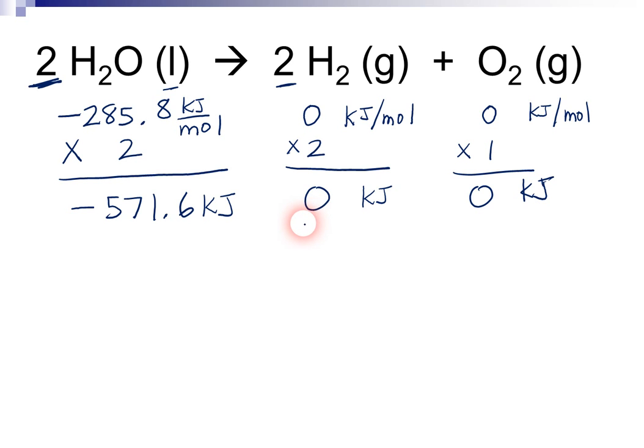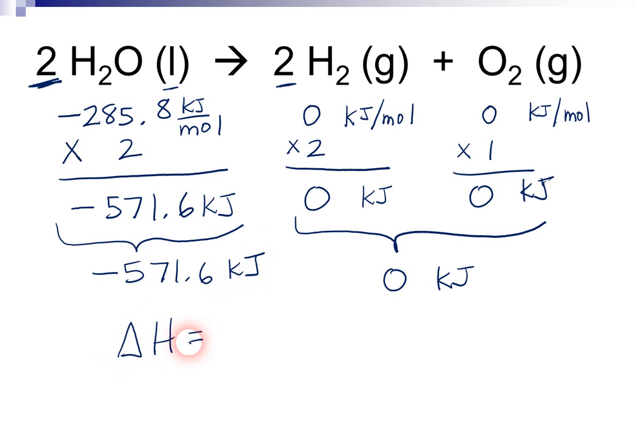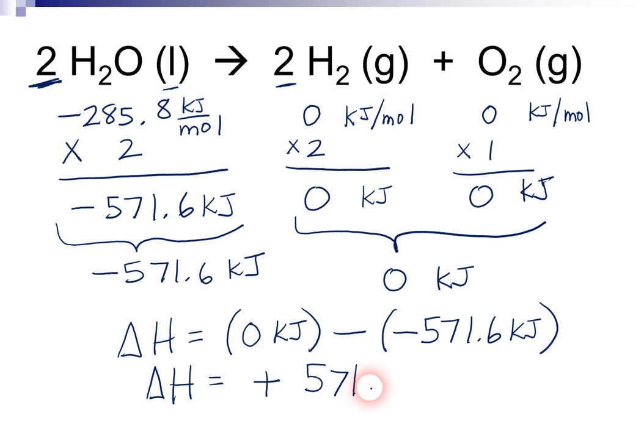Now, the equation is sum of products minus the sum of the reactants. Well, there are two products here, and if we add those together, zero plus zero is zero kilojoules, and there's only one reactant over here, and so the sum of that is pretty easy to calculate. And so delta H is going to be equal to the products minus reactants. So that's zero kilojoules, the product value, minus the reactant value, negative 571.6 kilojoules. And we know that the two negatives make a positive, and so when you do the mathematics here, you get that the answer is positive 571.6 kilojoules.